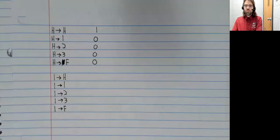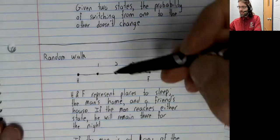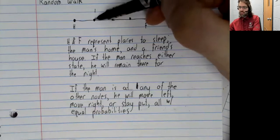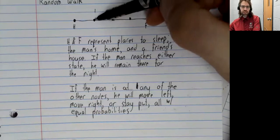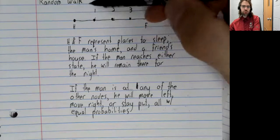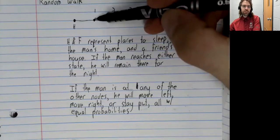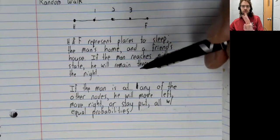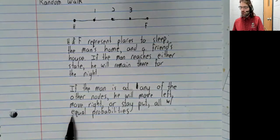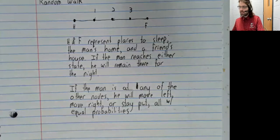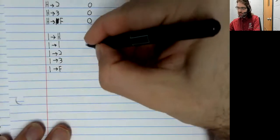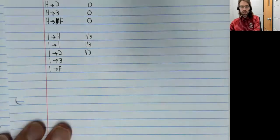The probability of going from H to 2 is 0. Now suppose the man is in state 1. The man is here. According to what we have written, one of three things could happen. He could go left to H, he could stay put at one, or he could go right to two. Well, three possibilities, all equally likely, makes these transition probabilities one third.